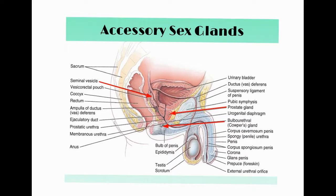The male anatomy includes accessory sex glands: the prostate gland and the bulbourethral (Cowper's) glands. Most importantly, you need to be able to trace the path of sperm: it starts in the seminiferous tubules in the testes, moves to the epididymis, then through the vas deferens, then the ejaculatory duct, and finally out through the urethra.